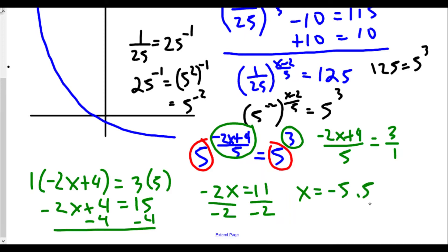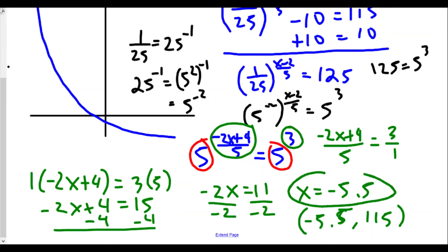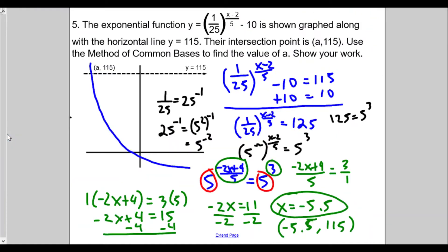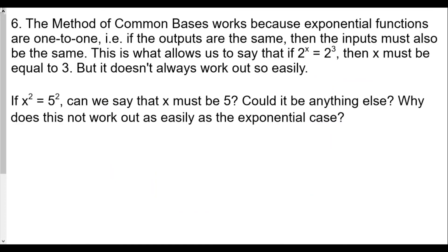So x — or in this case a — equals negative 5.5, or negative 11 over 2. The coordinate where the two graphs intersect will be (negative 5.5, 115). For number 6: the method of common basis works because exponential functions are one-to-one.